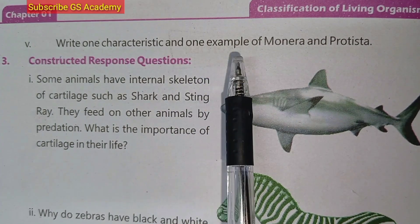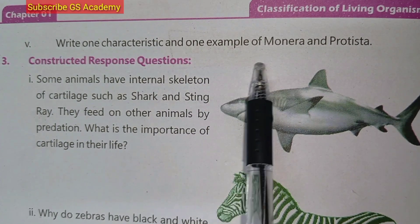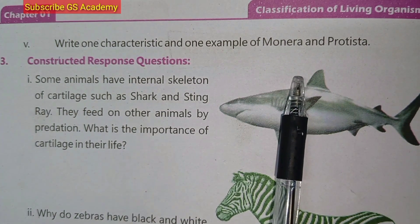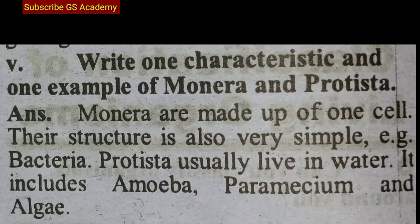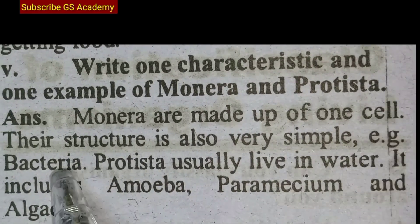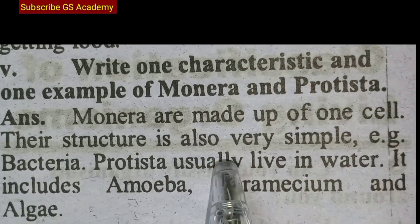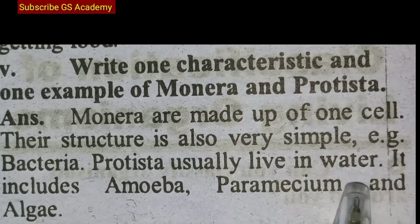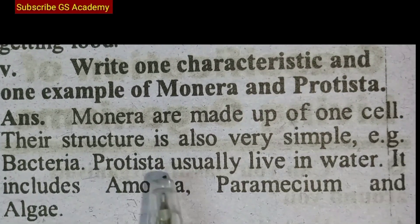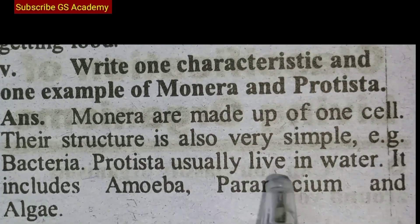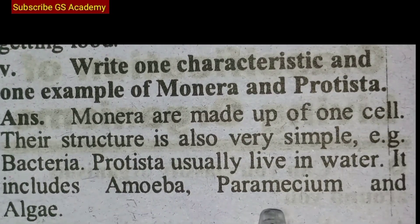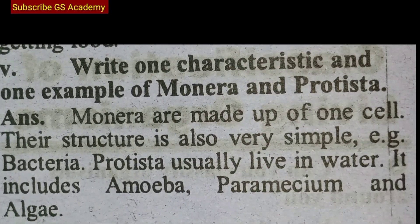Write one characteristic and one example each of Monera and Protista. Monera are made up of one cell and their structure is very simple. An example is bacteria. Protista usually live in water and include amoeba, paramecium, and algae.